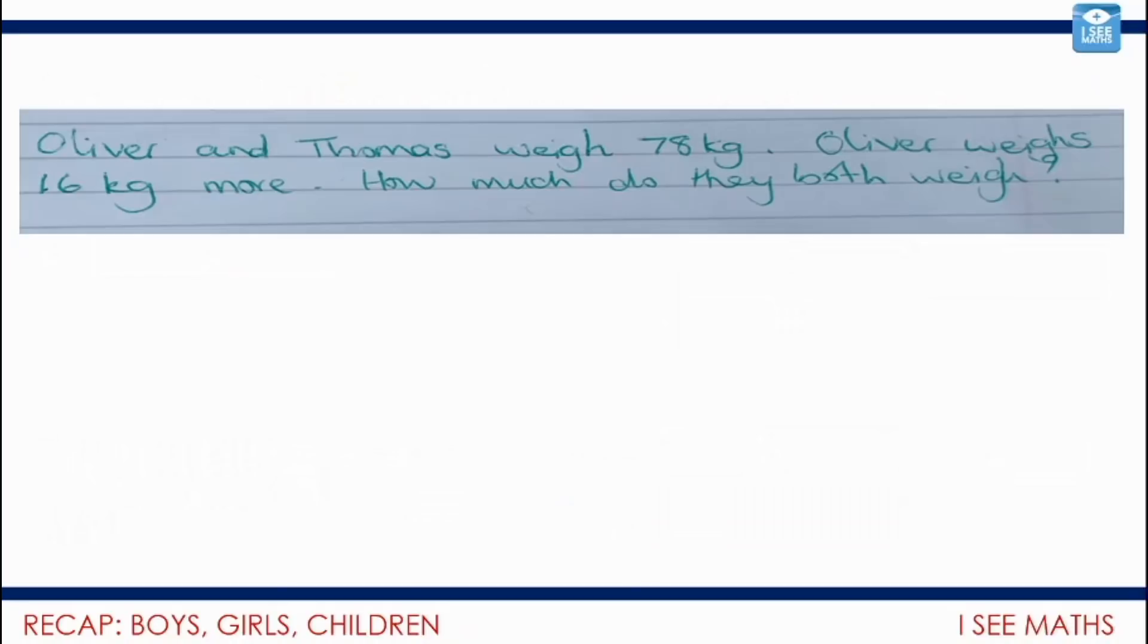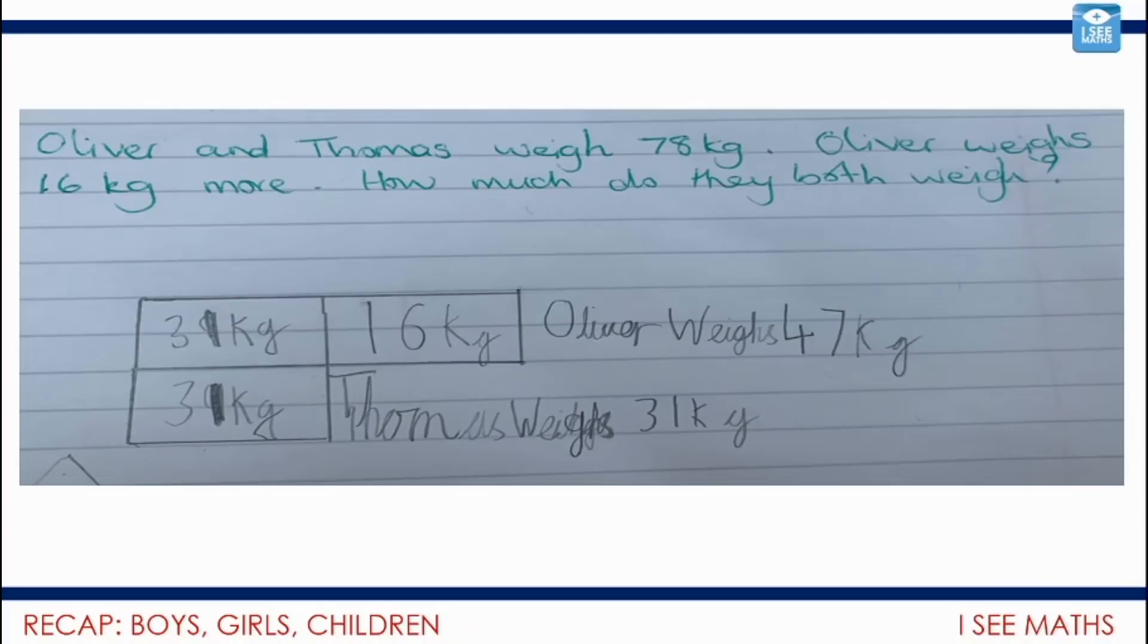Here's an example of a question where I'd ask you to think of your own question using this structure. And this is one of the ones that came through. So Oliver and Thomas weigh 78 kilograms. Oliver weighs 16 kilograms more. How much do they both weigh? Pause the video and have a go. Okay dokey, let's have a look. Here we can see the bar model. So 78 kilograms in total. We subtract that amount that Oliver weighs more, the 16 kilograms. And then that leaves us with 62 kilograms and we half that difference. So Thomas weighs 31 and Oliver weighs 31 plus 16, 47. Well done and thank you.